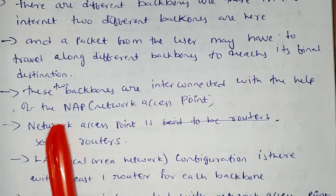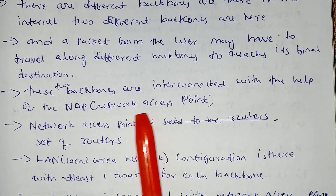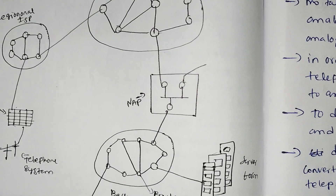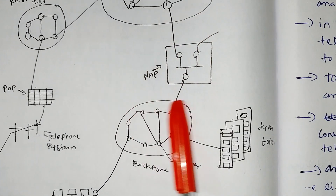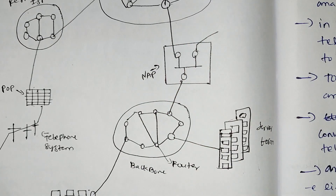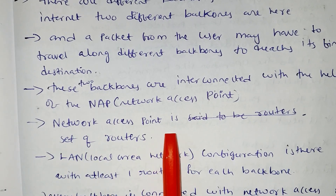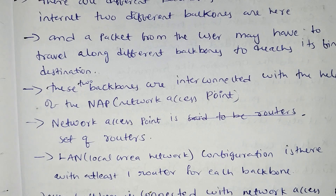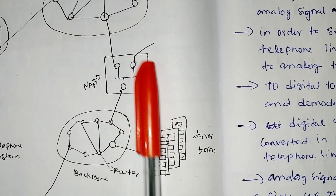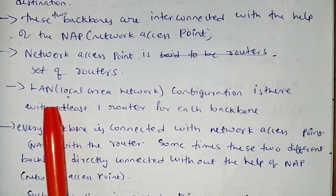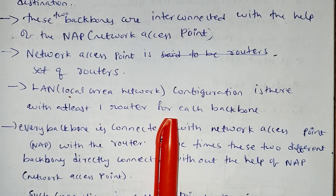These two backbones are interconnected with the help of NAP — Network Access Point. Network Access Point is a set of routers with at least one router for each backbone.